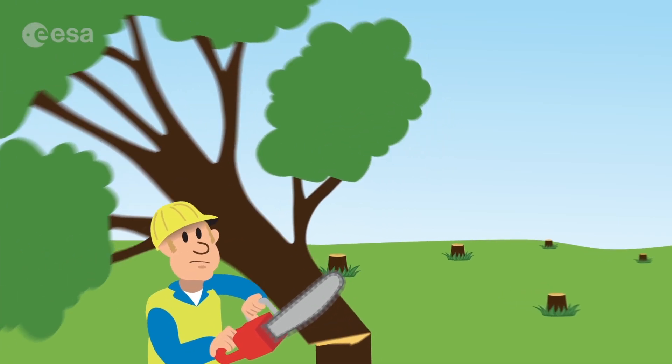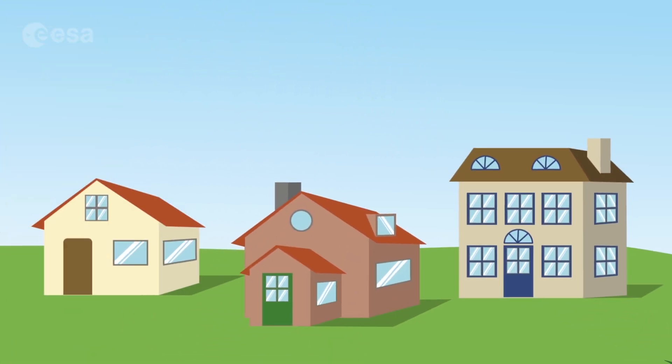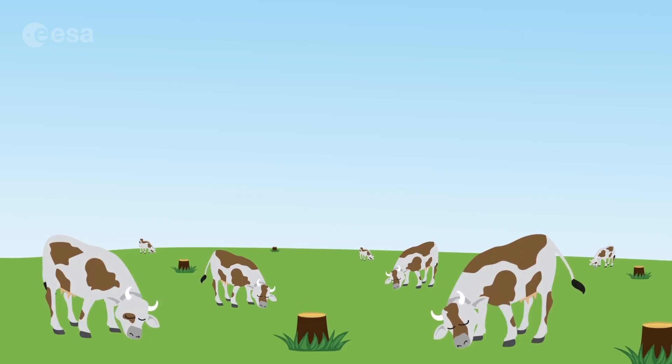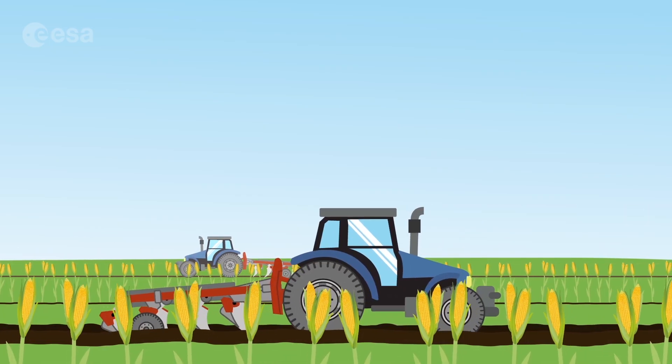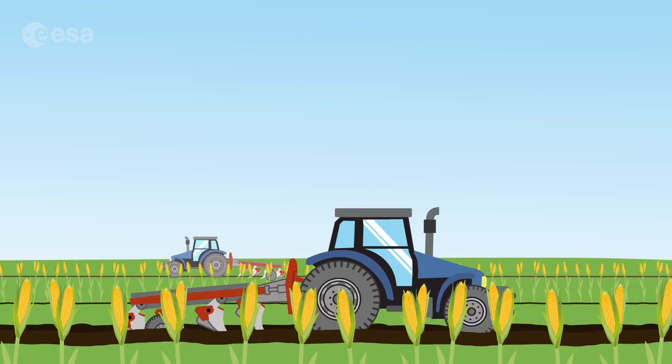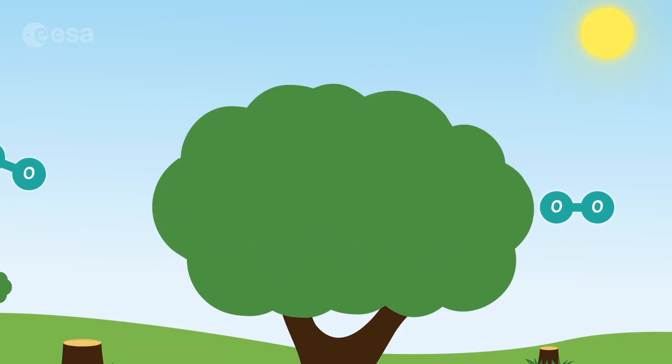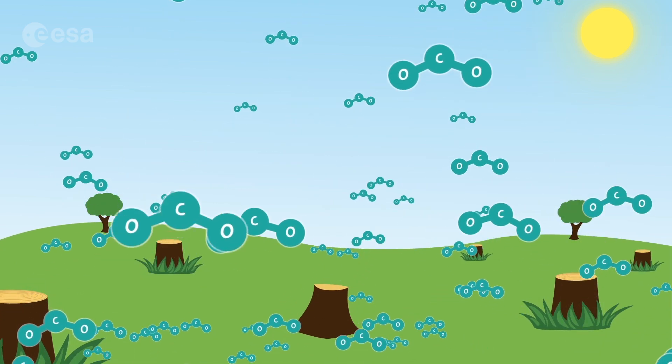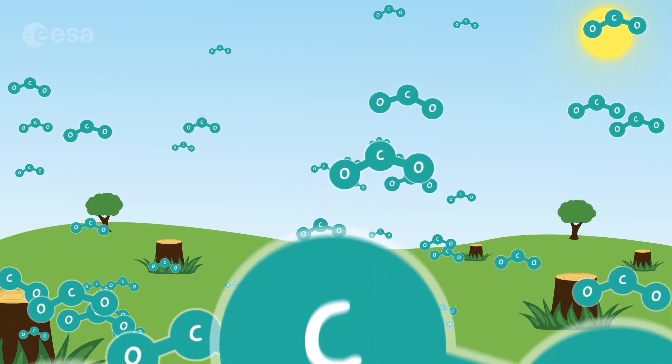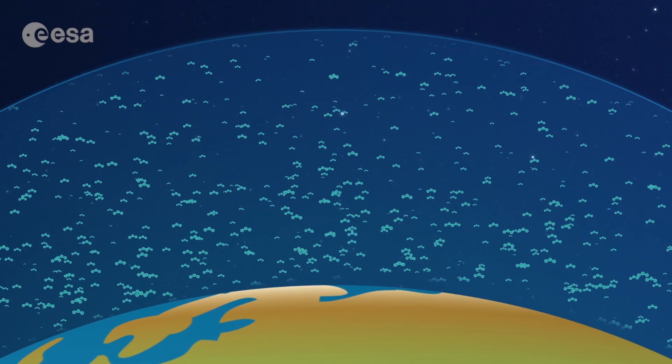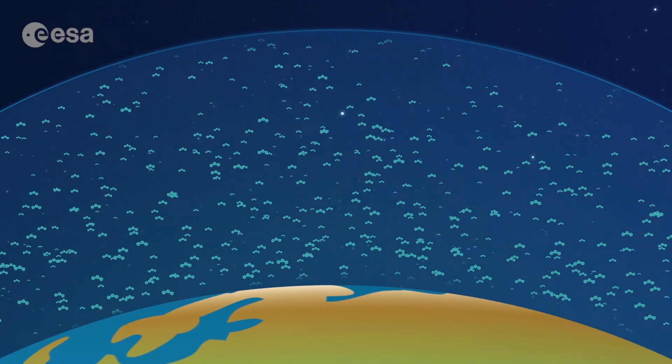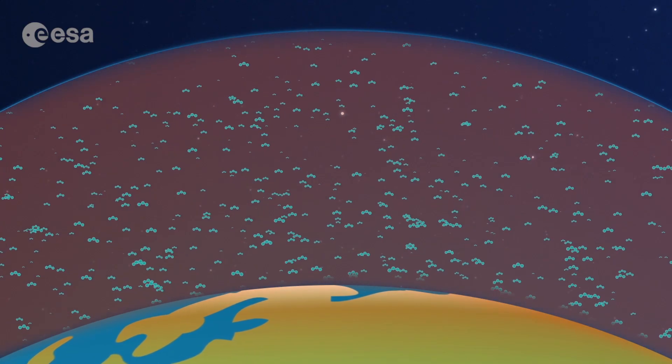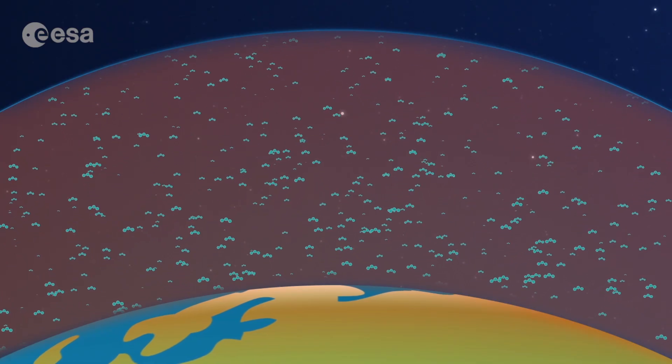Humans also cut down trees to build houses, or use the land to raise cattle or plant crops. This is also making carbon dioxide rise, because trees are good at absorbing this gas and taking it out of the atmosphere. So the less trees we have, the less carbon dioxide is absorbed, and the more of it we have in the atmosphere. All this carbon dioxide is making the greenhouse effect too powerful, and increasing temperatures on Earth by trapping too much heat in.